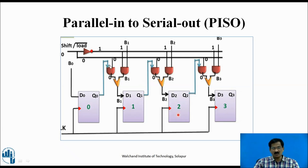Looking at the combinational circuit with two AND gates whose outputs are given to an OR gate: output of Q0 is given to the combinational circuit, and its output is given as D1, similarly for the remaining flip-flops. If the shift-load-bar signal is 1, AND gates A1, A2, A3 are enabled — data Q0 is loaded to D1, Q1 to D2, and Q2 to D3. In other words, when the signal is 1, data is shifted from left to right (FF0 to FF1, FF1 to FF2, FF2 to FF3), providing the serial output.